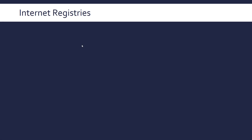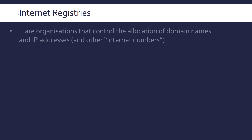This video is going to be a quick explanation of some really important organisations called internet registries. These are usually non-profits, often associated with governments, and they control the allocation of internet numbers.